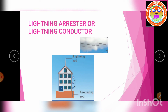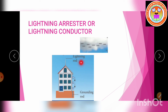When a negatively charged cloud passes above the building, it induces a positive charge on the spike. Since the induced charge density on the thin sharp spike is large, according to corona discharge, this positive charge ionizes the surrounding air.